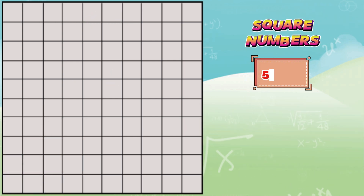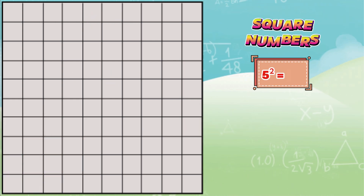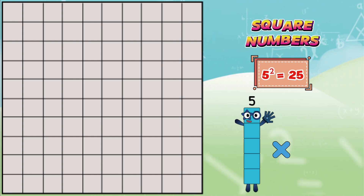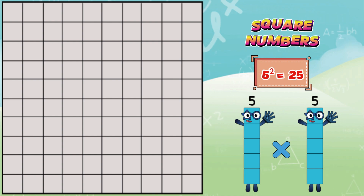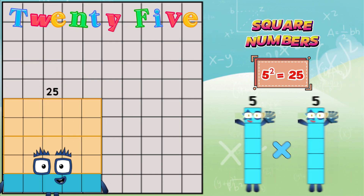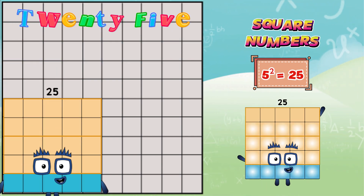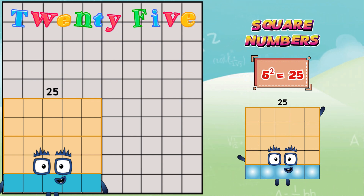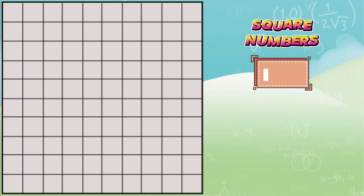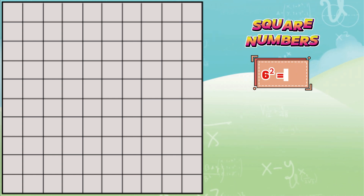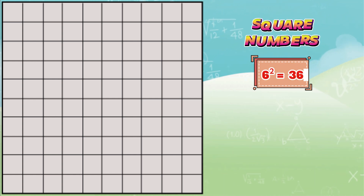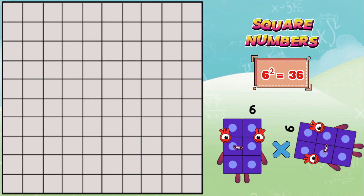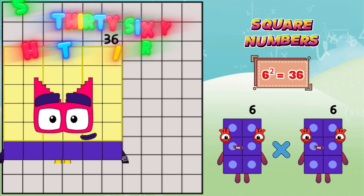Five squared is equals to twenty-five, or five multiplied by five, is equals to twenty-five. Six squared is equals to thirty-six, or six multiplied by six, is equals to thirty-six.